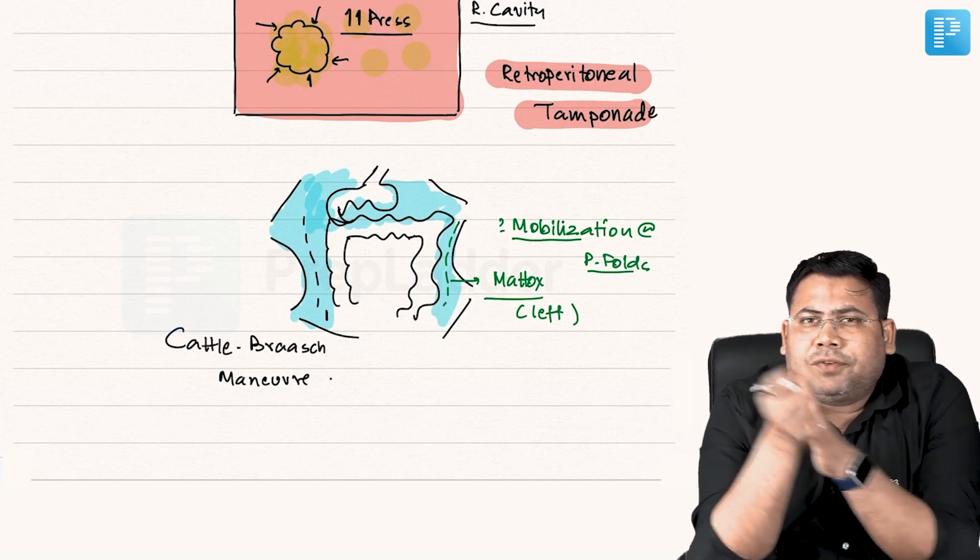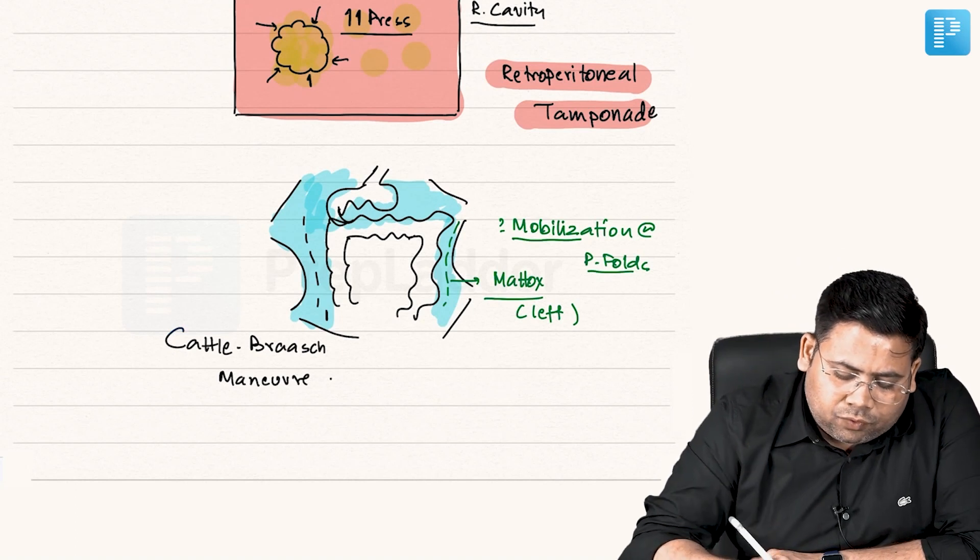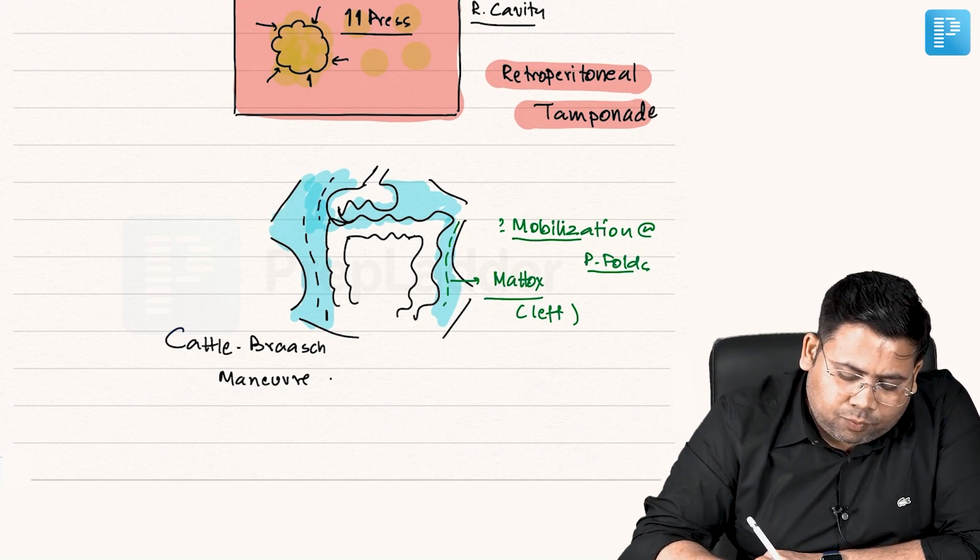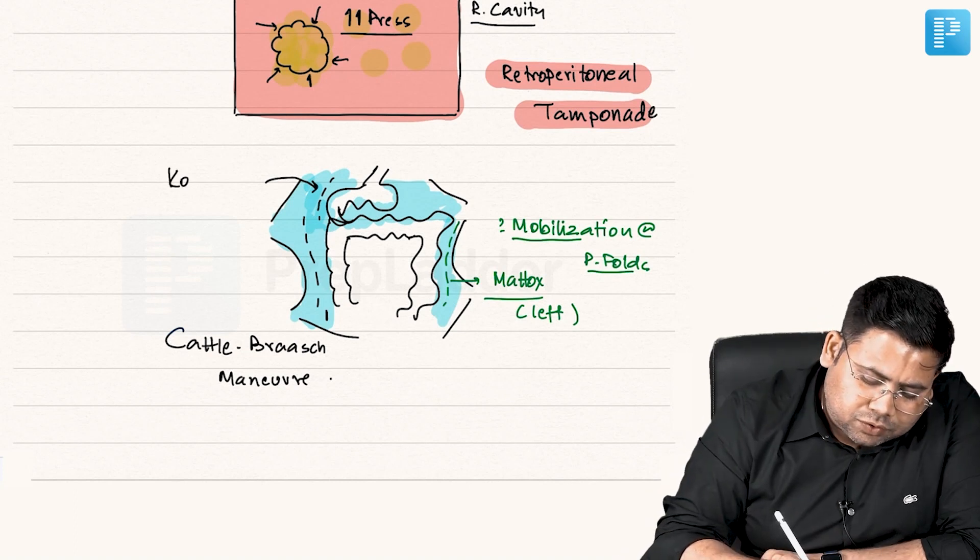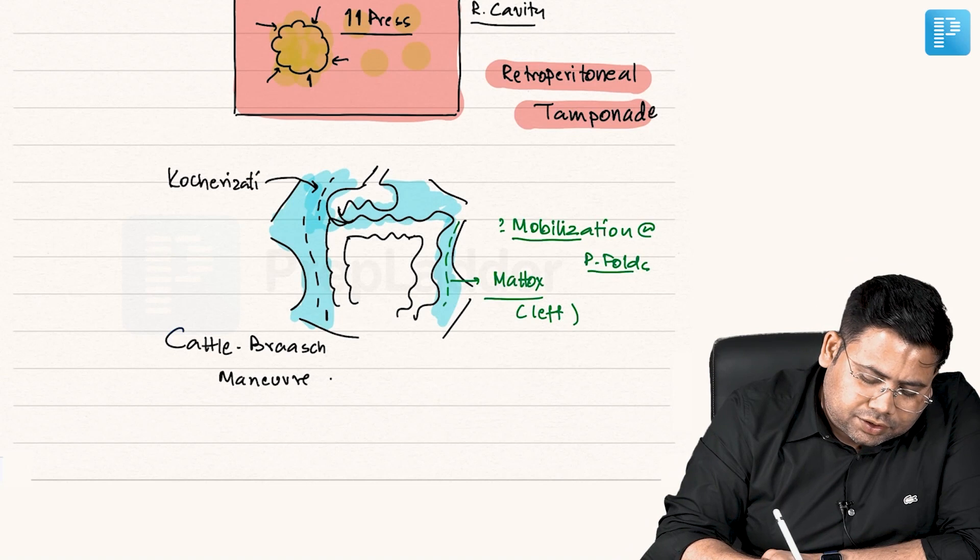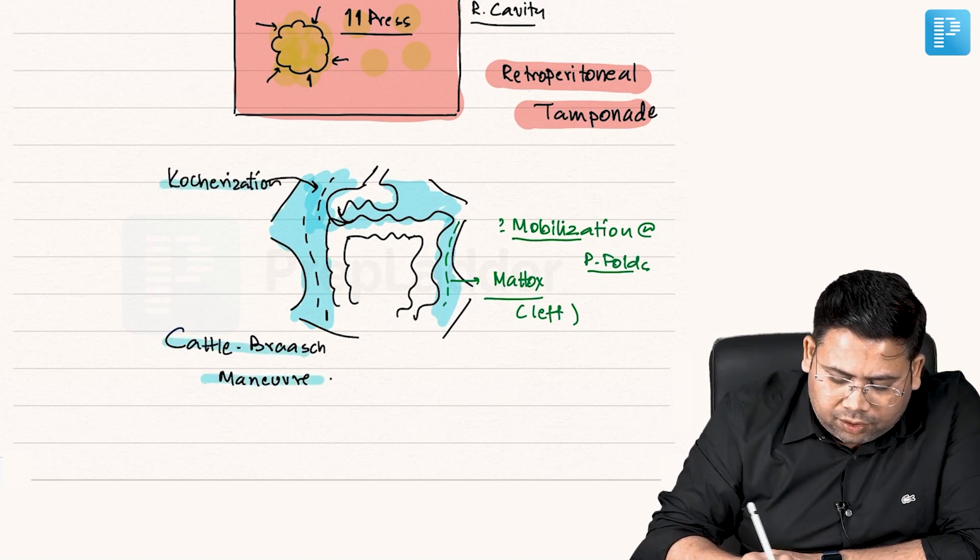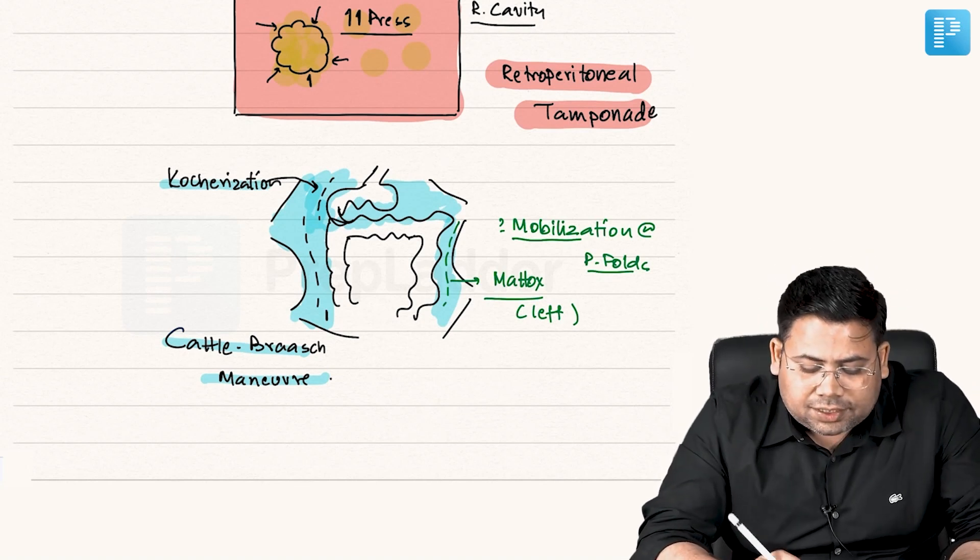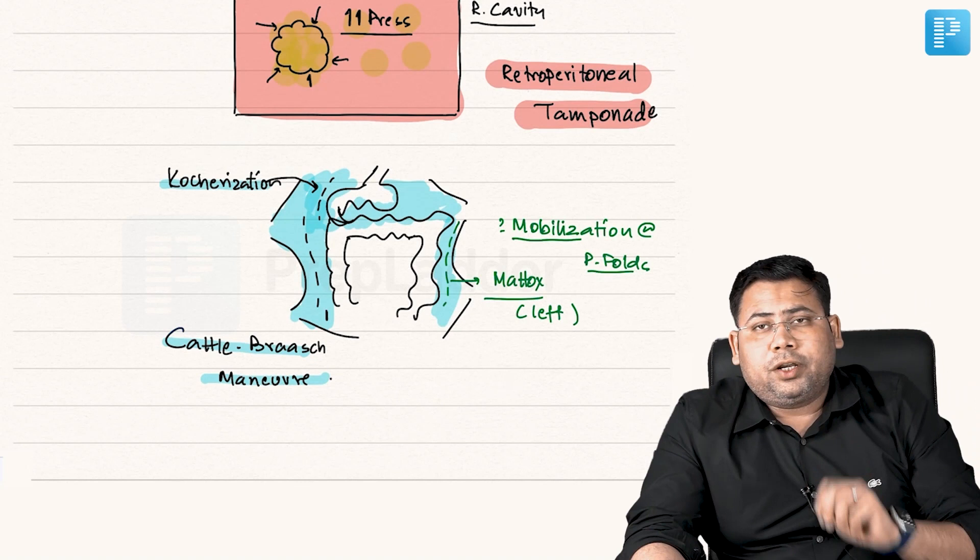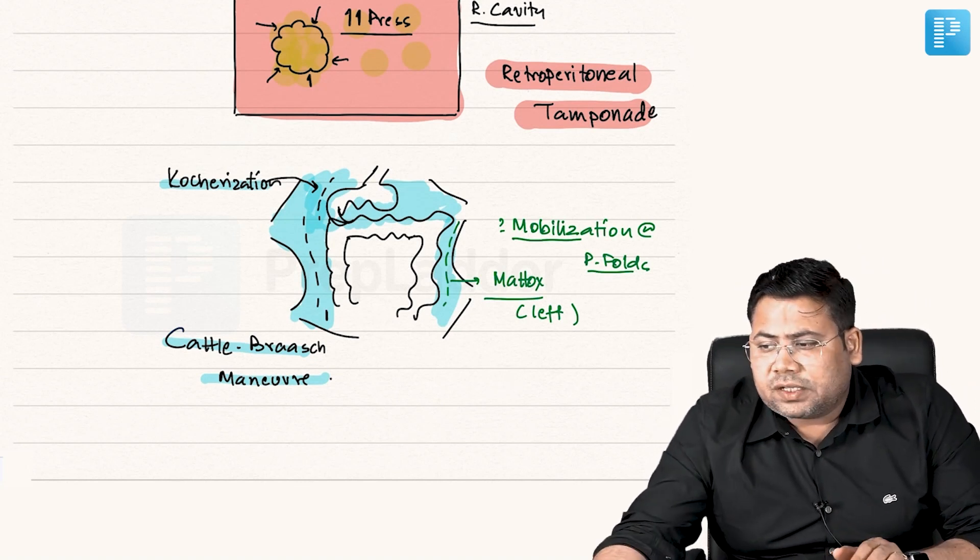And of course, everyone knows that this mobilization of the duodenum, this is what is known as Kocherization. Kocherization, there are three important things that you should be knowing. Everyone should be knowing about these maneuvers also. We have to understand the importance of this retroperitoneal tamponade effect or we will always miss our patients.